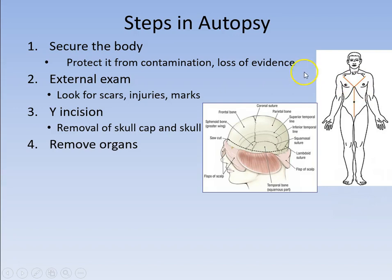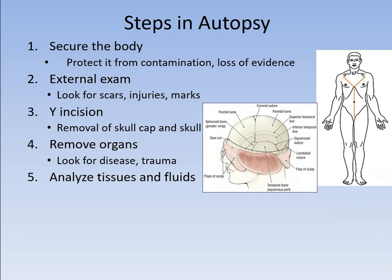After the Y-incision, they can remove the organs. Each organ is actually examined — we look for disease, we look for trauma, is there bruising, are there cuts, is there a bullet in a particular organ? After we've weighed and examined all the organs, we can start analyzing the tissues and fluids — looking at the blood, looking at the urine, looking at the vitreous humor, analyzing the liver cells to see what sort of shape they're in. This takes the most amount of time because there are so many different tests you can run.